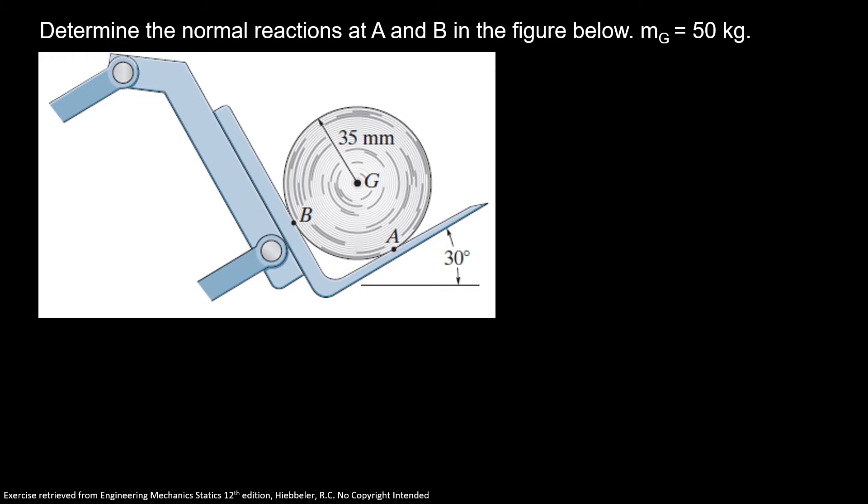Now let's go for our problem. Determine the normal reactions at A and B in the figure below. Mg is equal to 50 kilograms.